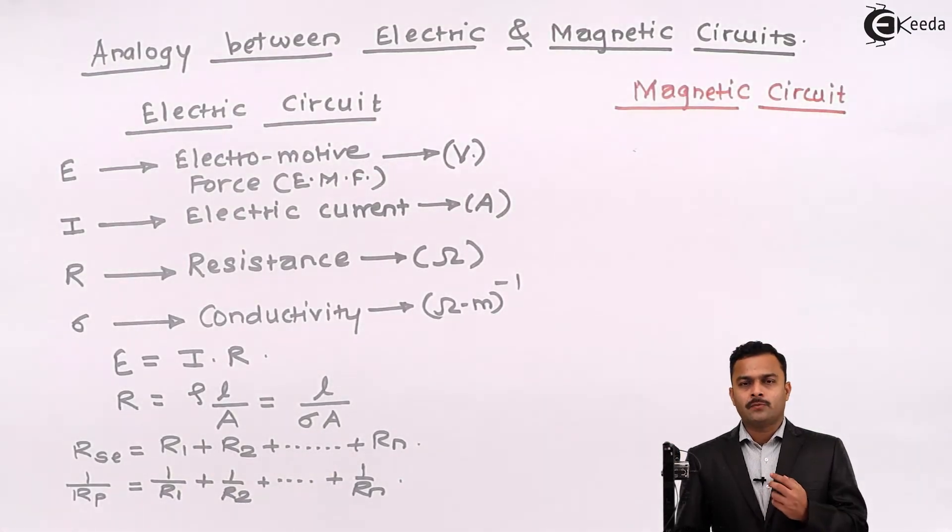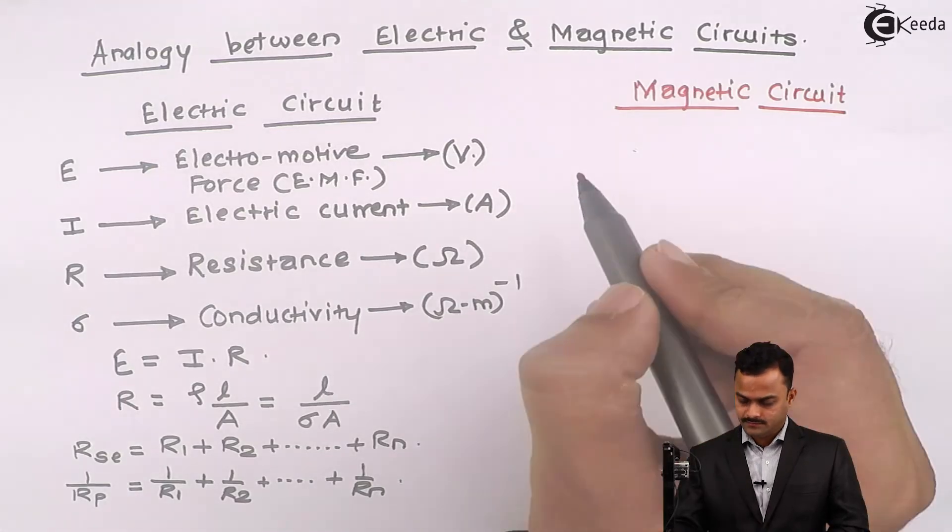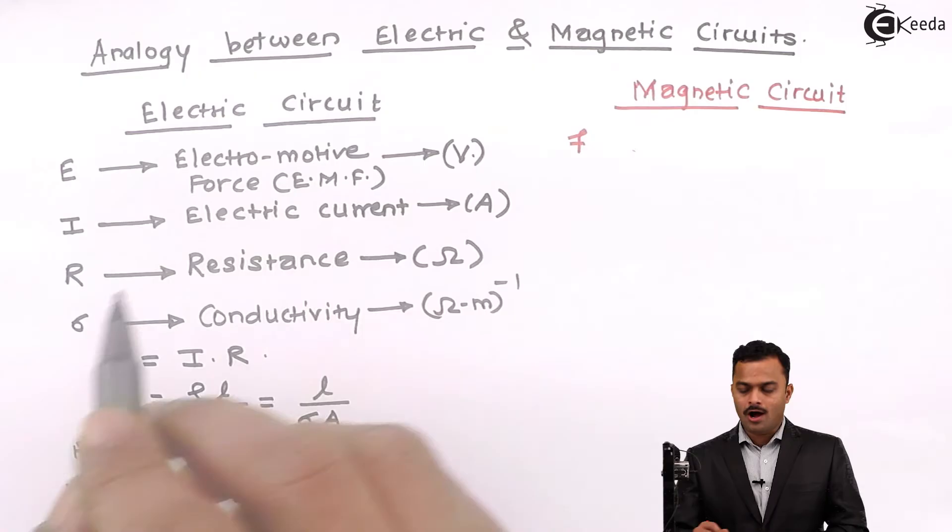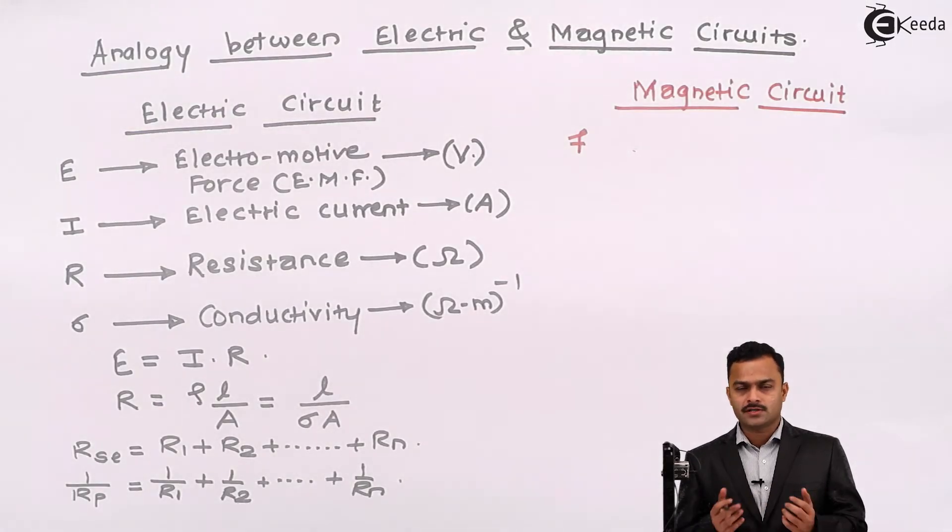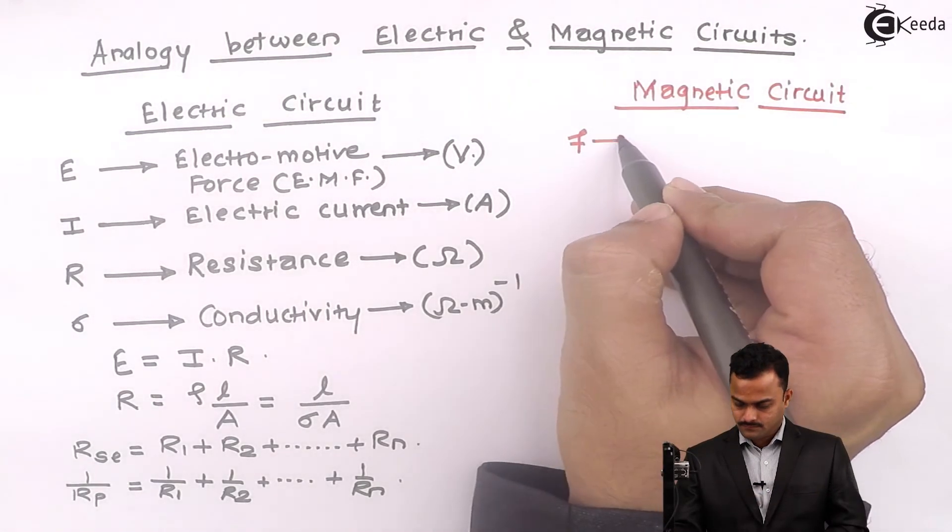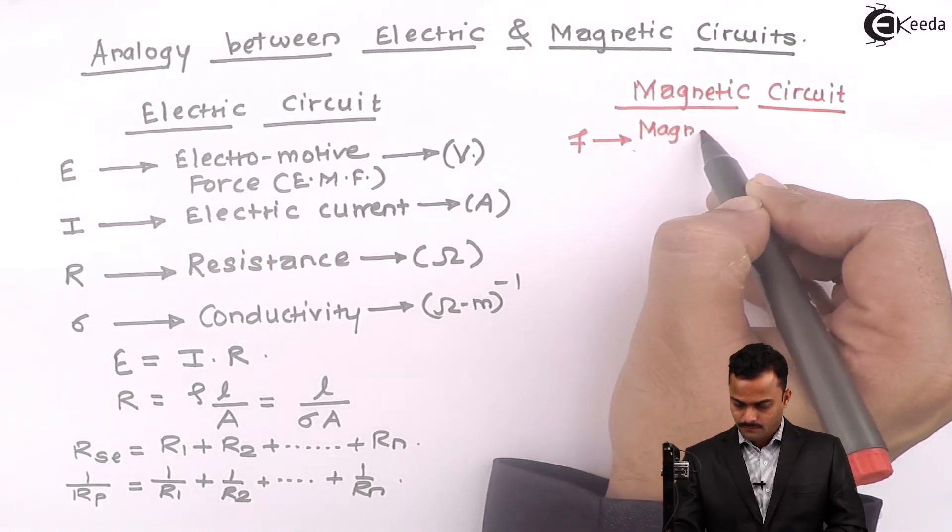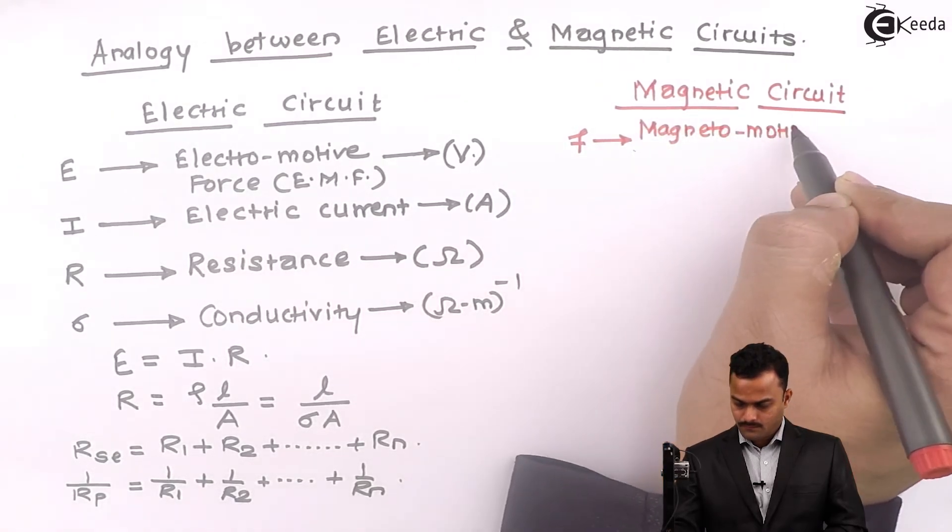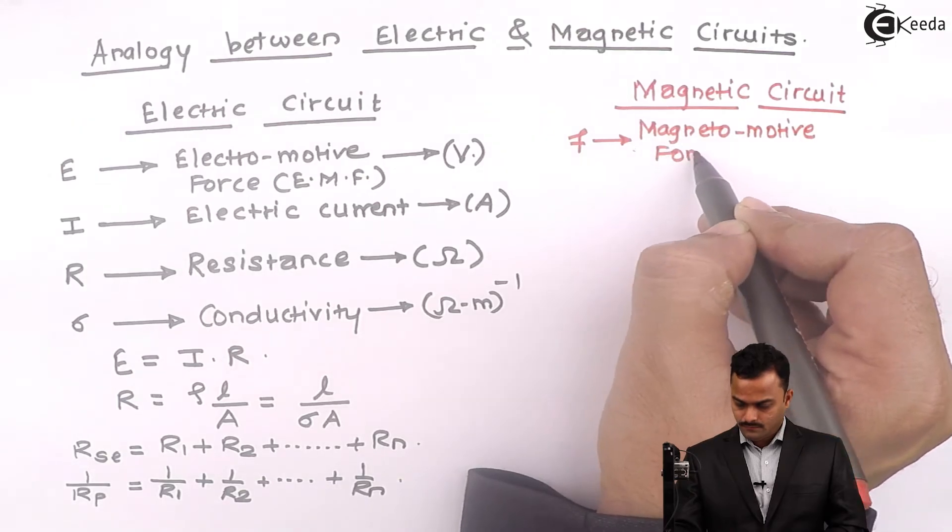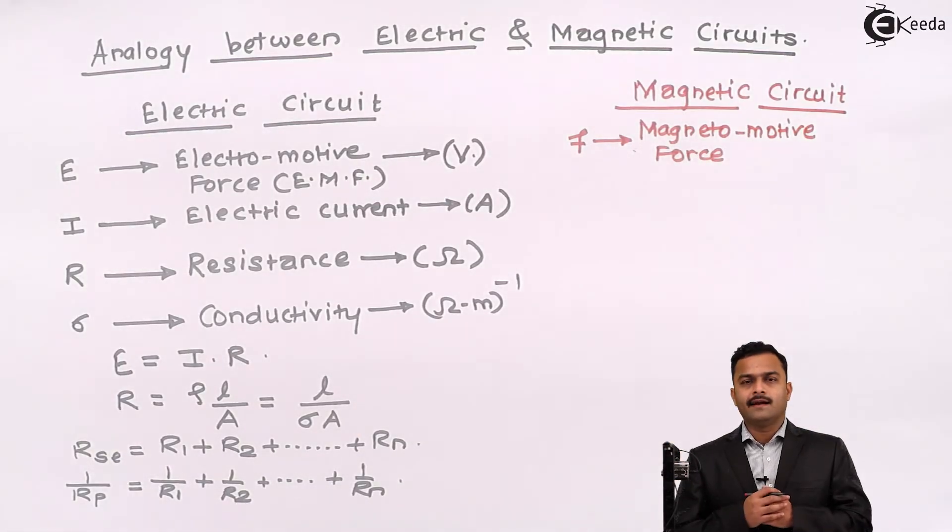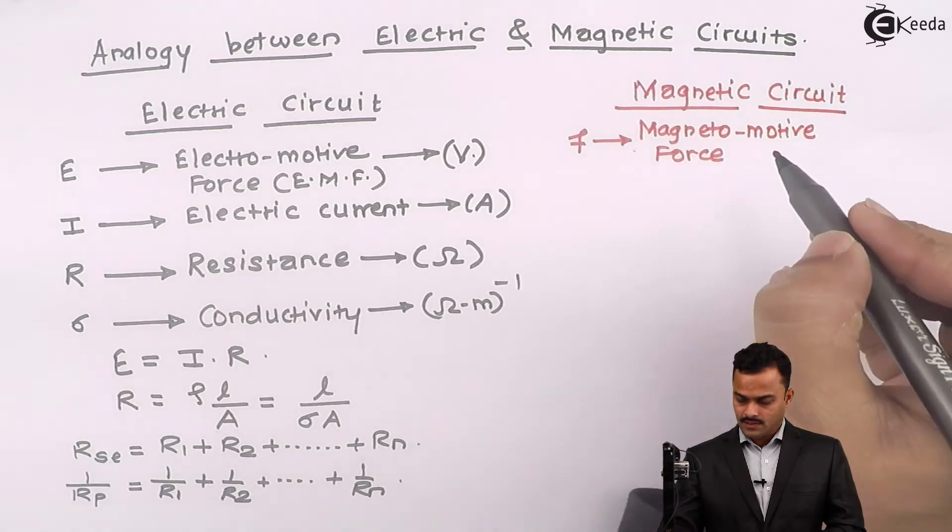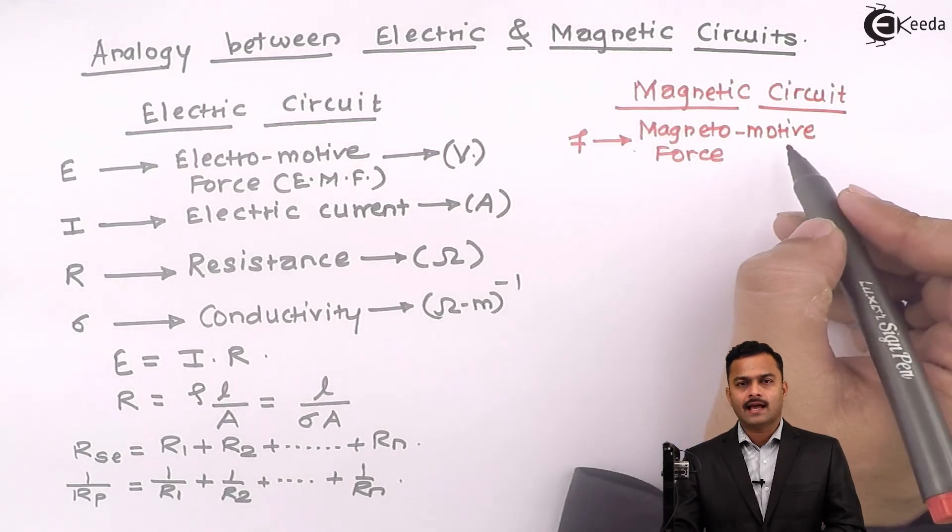So analogous to electromotive force, we have magnetomotive force. The job of this force is to produce magnetic flux. And it is nothing but multiplication of current with the number of turns of a coil. So it is nI is the formula. Hence the unit is ampere turn.